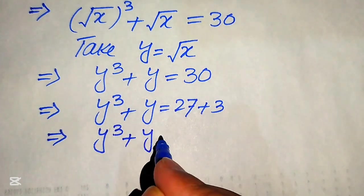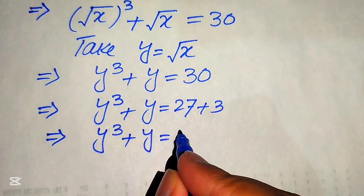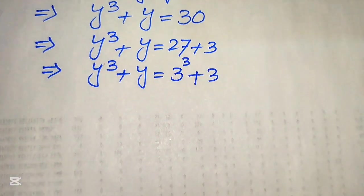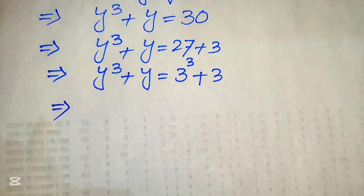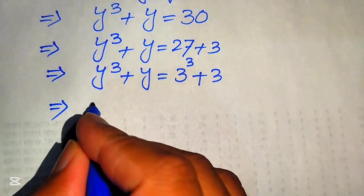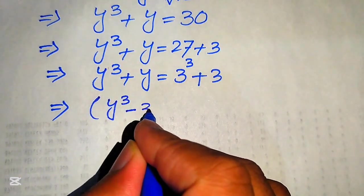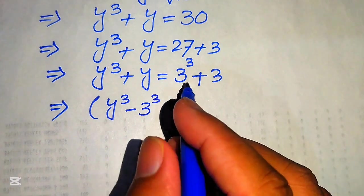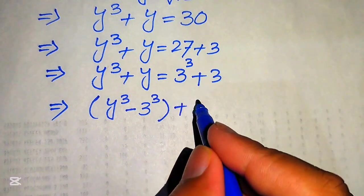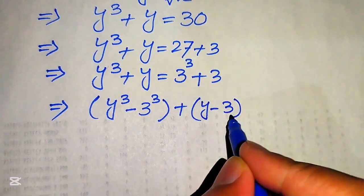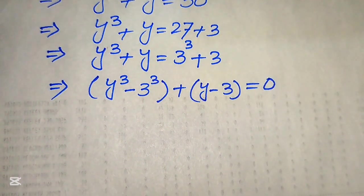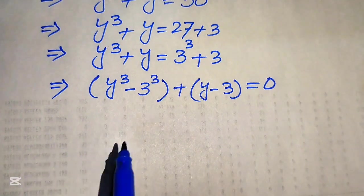We write: y³ + y = 3³ + 3. Now we move all terms to the left side, pairing cubic with cubic and linear with linear. Moving 3³ gives y³ − 3³, and moving 3 gives y − 3, so the whole equation becomes y³ − 3³ + y − 3 = 0.